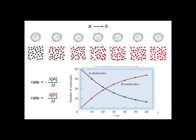This graphic shows A being converted to B. The black molecules are A, the red molecules are B. With time you see that the concentration of the black molecules decreases, as shown in the graph, and the red molecules increase, as shown in the graph.